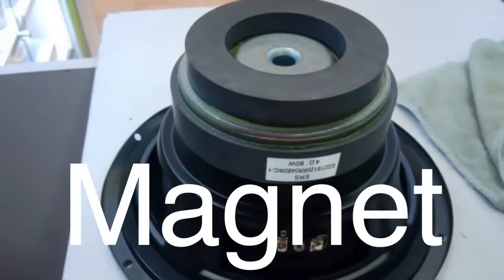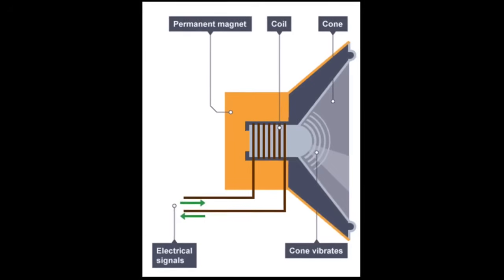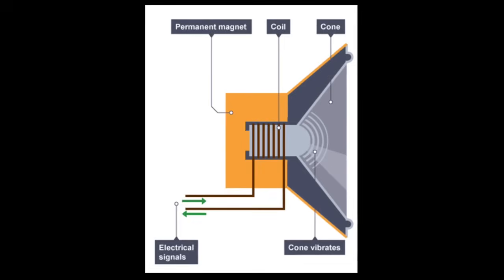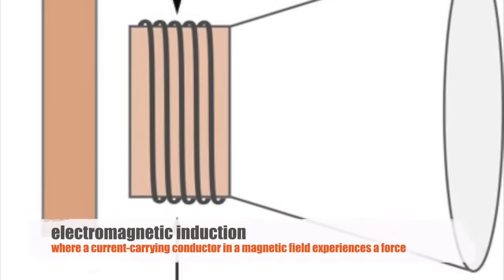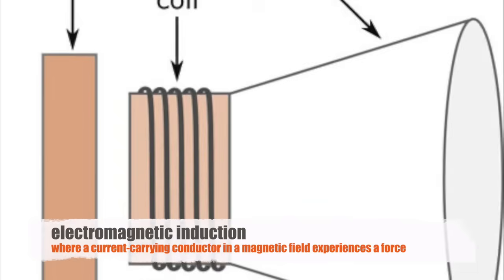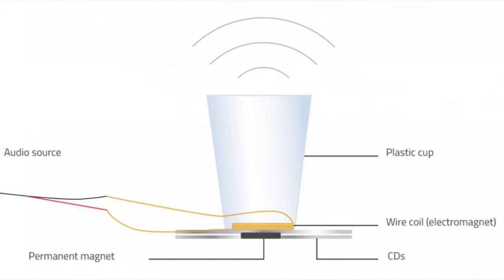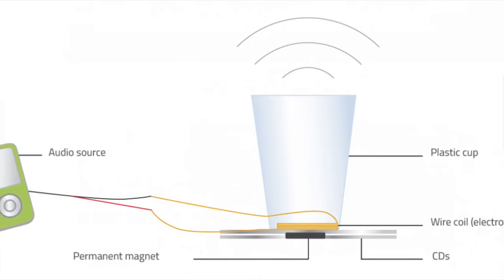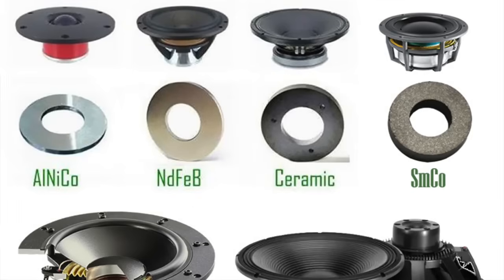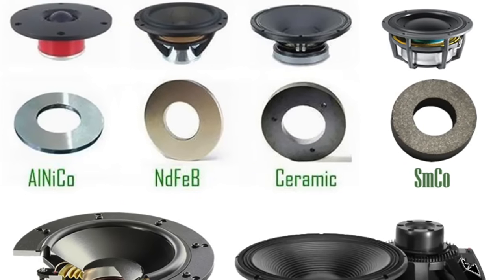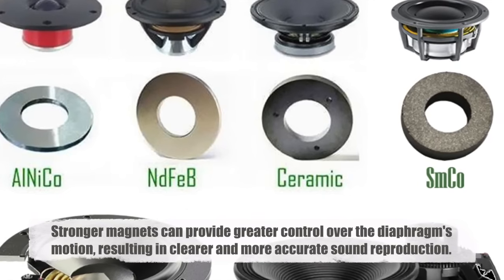The magnet in a loudspeaker is a crucial component that works alongside the voice coil. The interaction between the magnetic field of the magnet and the magnetic field generated by the current in the voice coil is what causes the diaphragm to move. This principle is based on electromagnetic induction, where a current-carrying conductor in a magnetic field experiences a force. The direction and magnitude of this force change with the varying electrical signal, causing the diaphragm to move in a precise manner to reproduce the sound waves corresponding to the original audio signal.